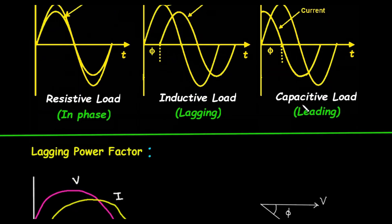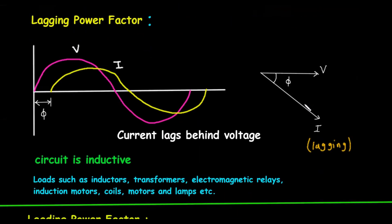Now, let's dive deeper into each of these scenarios. First, the lagging power factor. As we saw, this occurs when the current lags behind the voltage. This happens in a circuit that is predominantly inductive. Inductive loads are very common and include devices like inductors, transformers, electromagnetic relays, induction motors, coils, and even some types of lamps. The phasor diagram for a lagging power factor shows the voltage vector, V, pointing horizontally to the right. The current vector, I, is shown pointing downwards at an angle Φ, visually representing that it is lagging behind the voltage.